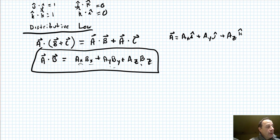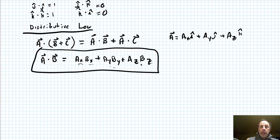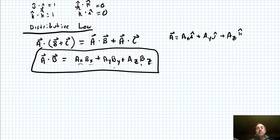So that's the dot product. We're going to end here, and in the next and last video we will deal with the cross product, which is a vector product. See you on the flip side.